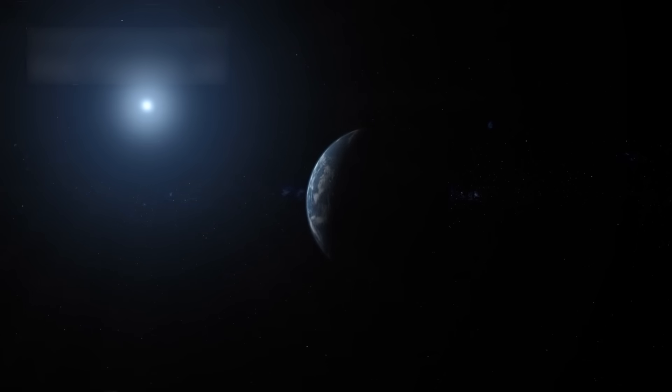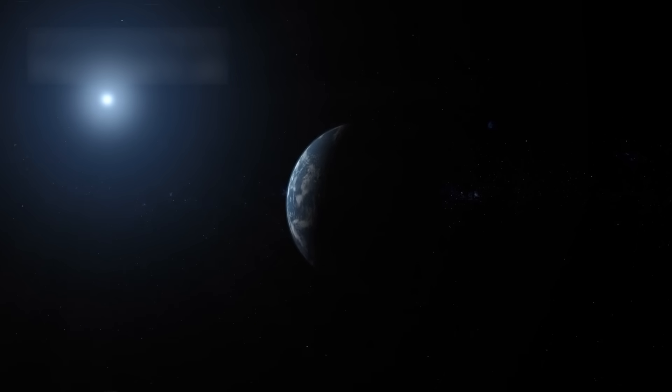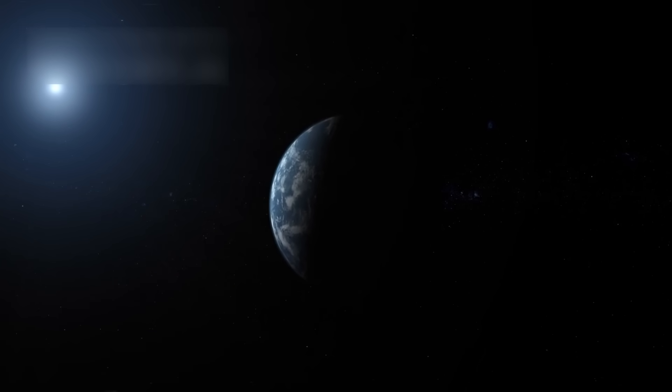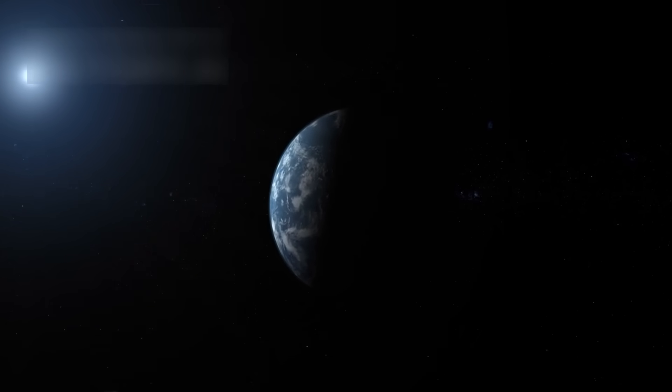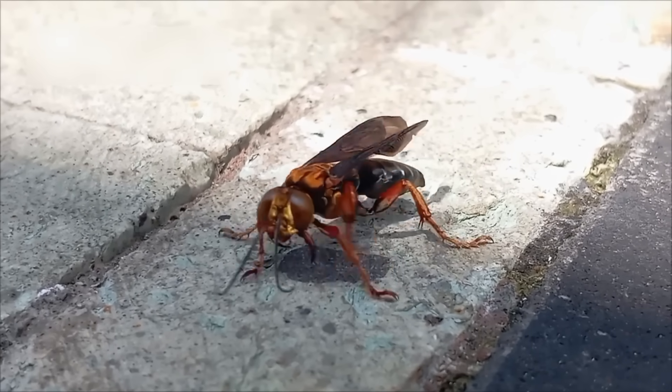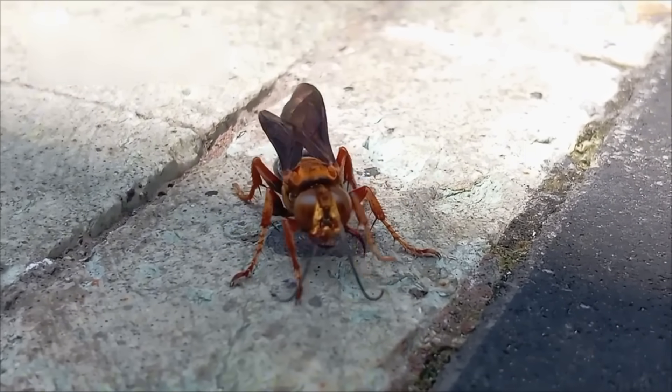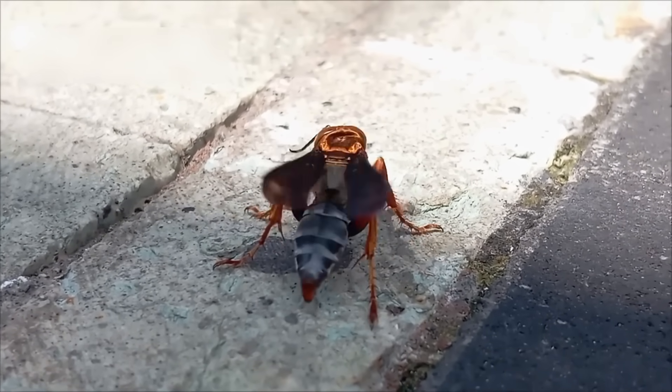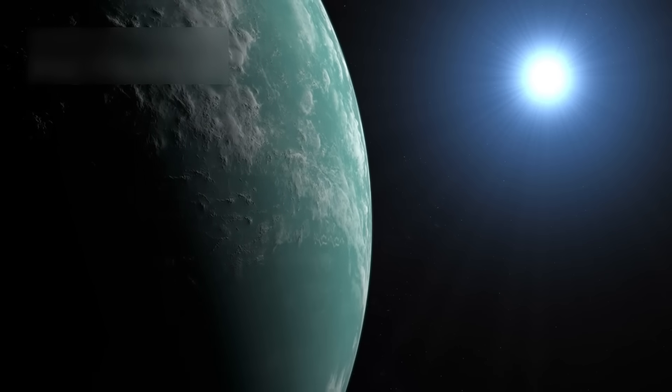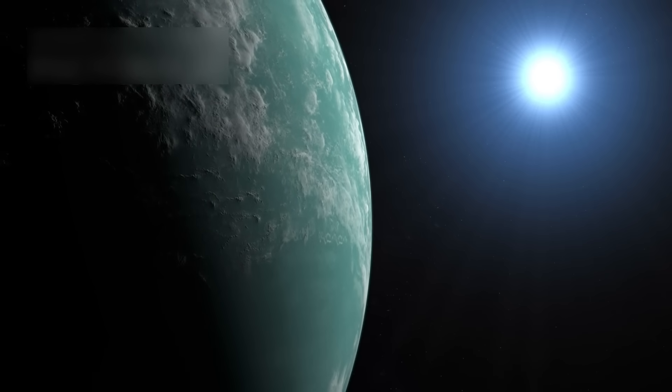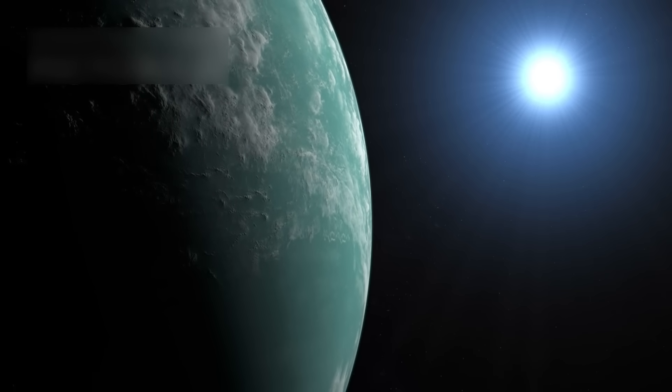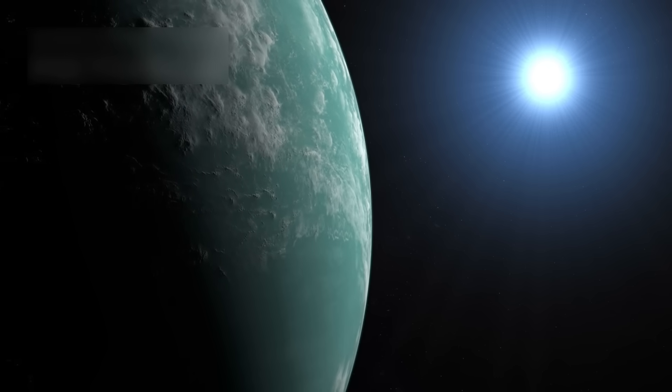One exoplanet that has gained a lot of attention is WASP-39b, located about 700 light-years away in the Virgo constellation. It's an extremely hot gas giant, orbiting its star so closely that its atmosphere is boiling. JWST detected carbon dioxide, sulfur dioxide, and silicates in its atmosphere, a first in exoplanetary research.